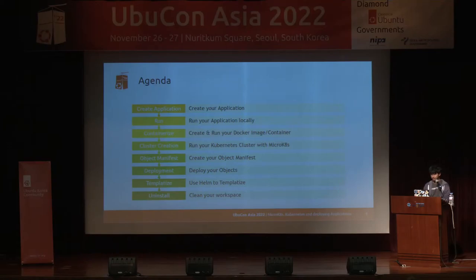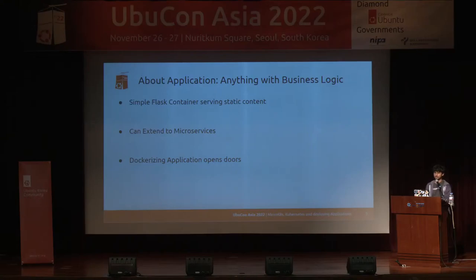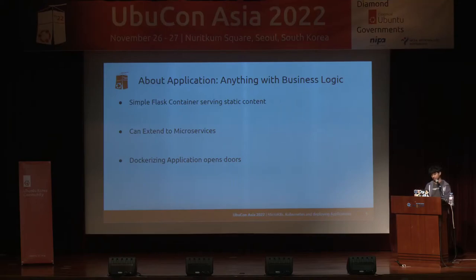You might be wondering what application we are building. An application is anything with business logic in it. Right now we are using a simple FastAPI container serving static HTML content, but it can extend to microservices or anything that delivers value to your customer. We will dockerize it because dockerizing helps us share the application, maintain a consistent environment, and move it to another environment like Kubernetes using orchestrators.